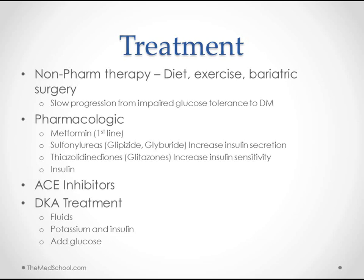Going back to type 1 — and DKA can occur in type 2 as well, but it's much more common in type 1 — if a patient comes in with DKA, the major treatment is fluids. That's the biggest thing: get fluids in. Then potassium, insulin, and potentially glucose. The glucose may sound counterintuitive when you're also giving insulin, but the insulin we're giving is not to decrease blood sugar — it's to prevent ketogenesis. The glucose is given alongside the insulin to keep blood sugars normal once they reach a normal level, while the insulin prevents further ketone production.